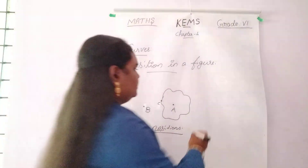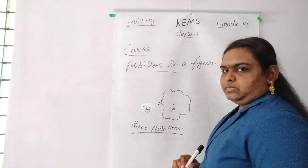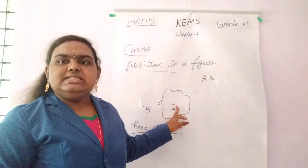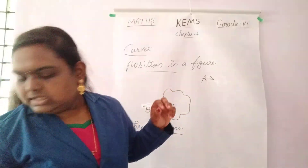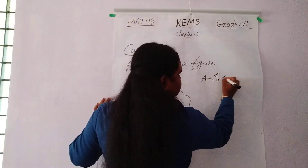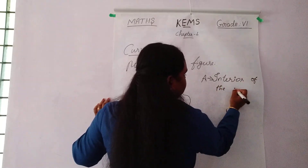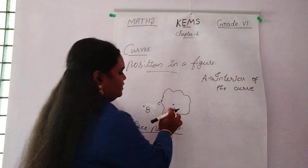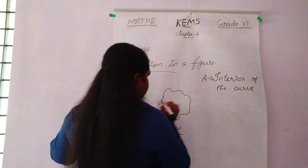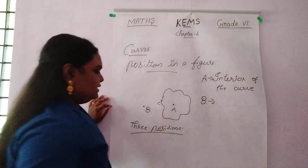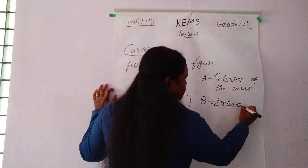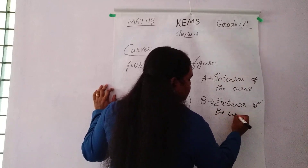What are the three positions? Point A, point B, and point C. Point A is known as the interior of the curve — that is, inside the curve. Point B is the exterior of the curve — that is outside.